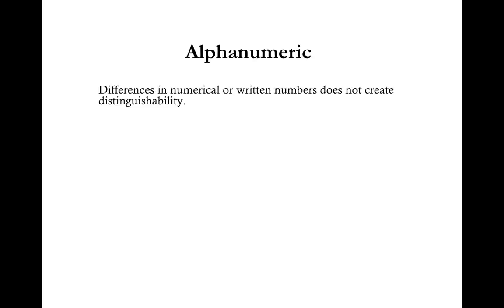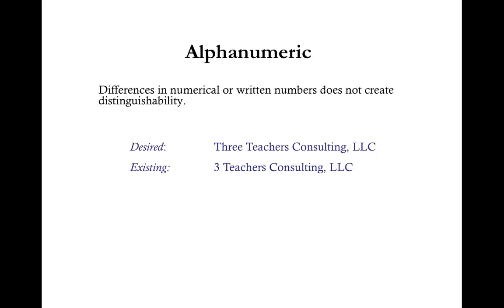Alphanumeric: Differences in numerical or written numbers do not create distinguishability. For example, if your desired LLC name is Three Teachers Consulting LLC with the word 'Three' spelled out, but during your search you found a company called Three Teachers Consulting LLC with the numeral 3, these are deceptively similar — the state does not look at these as any different — and therefore your desired LLC name would not be available for use. An alternative example would be A Few Good Teachers Consulting LLC.